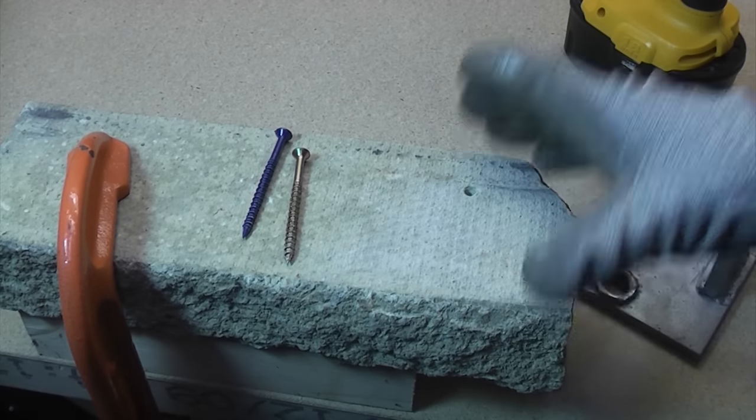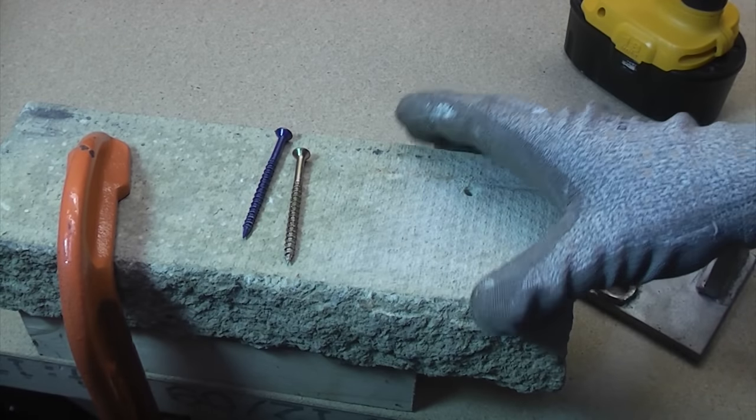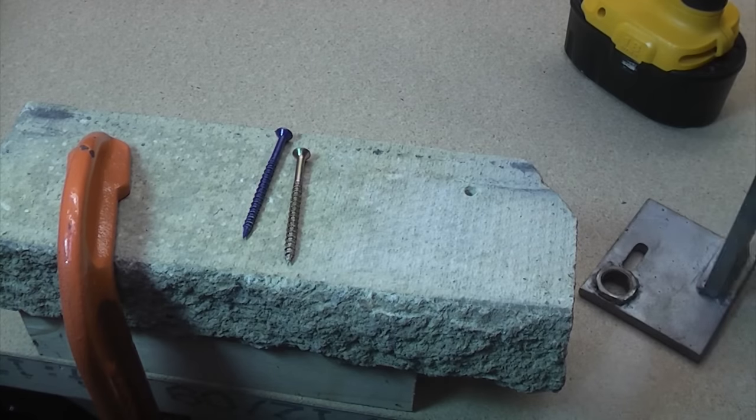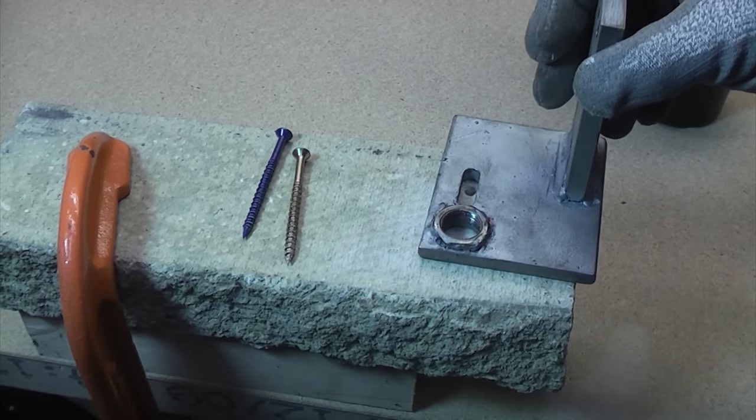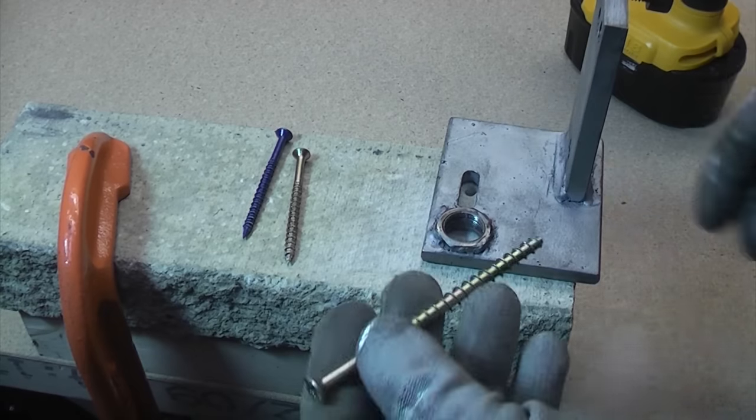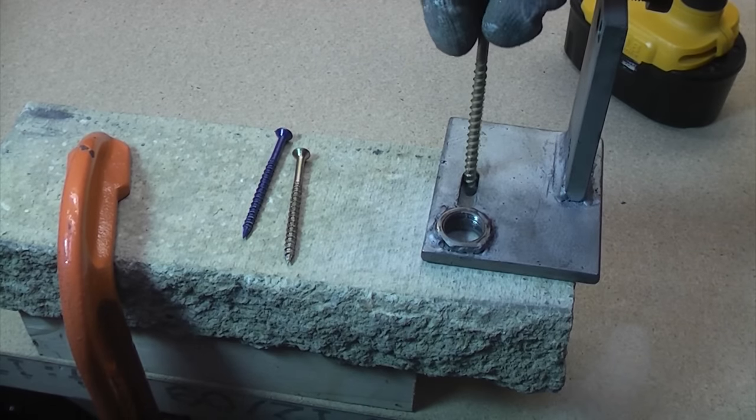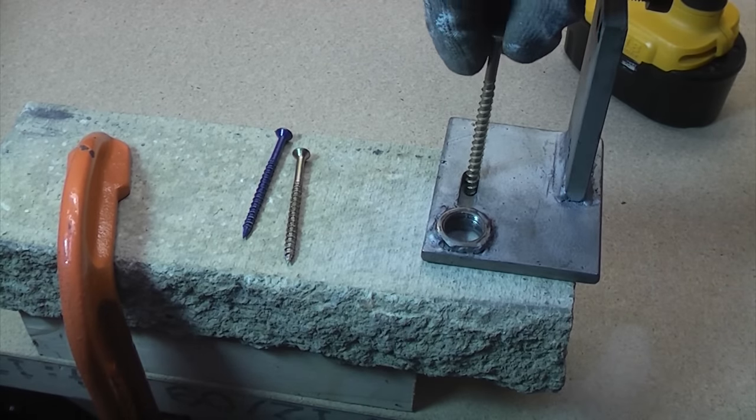So in order to show you how these work, I've got a concrete block here and I've drilled a hole in it which is the correct size. Then I've also got this bracket that we can put on there, and we can screw that in. You'll see that it will cut a thread into the concrete.